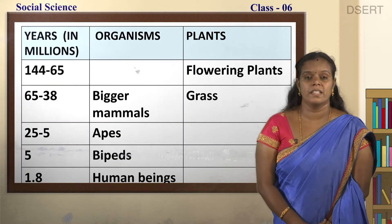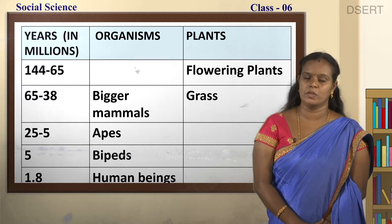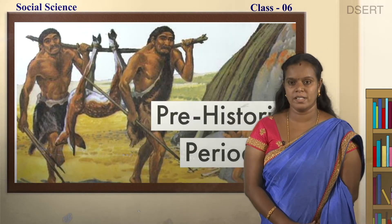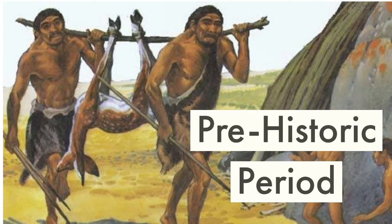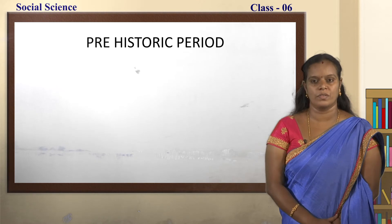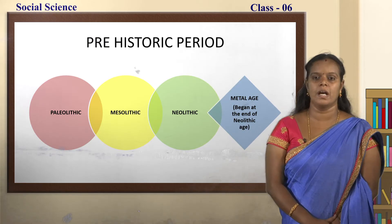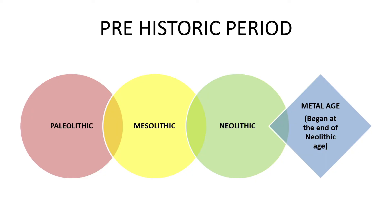This is how human beings evolved on the earth. It is said that the first man appeared in Africa and then later migrated to different parts of the world. Prehistoric period is divided into three main parts: Paleolithic, Mesolithic, and Neolithic age. One more age is the metal age, which comes under the Neolithic age itself and began at the end of the Neolithic age.